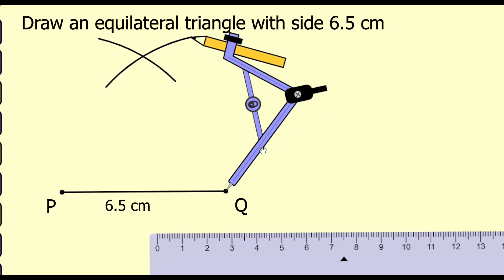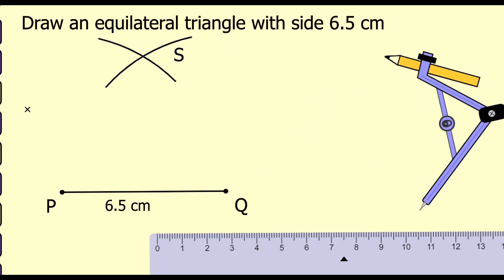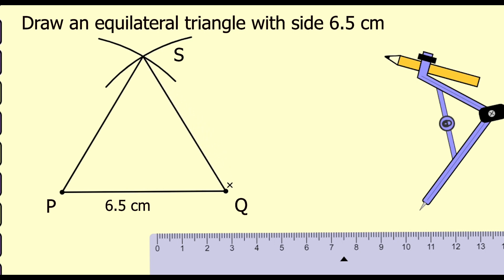This point of intersection is S. Join PS and QS. This is our required triangle PQS, which is an equilateral triangle with all three sides of 6.5 cm.